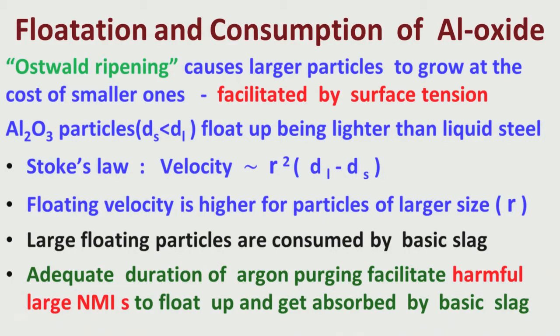Flotation of aluminum oxide — I have talked about Stokes' law, how it explains why inclusions which are larger in size should float up at a higher velocity. Because the density of the inclusions is less, and smaller inclusions will coagulate to form larger inclusions. Fortunately, larger inclusions are floating up at a higher velocity, so they will float up and get absorbed by the basic slag.